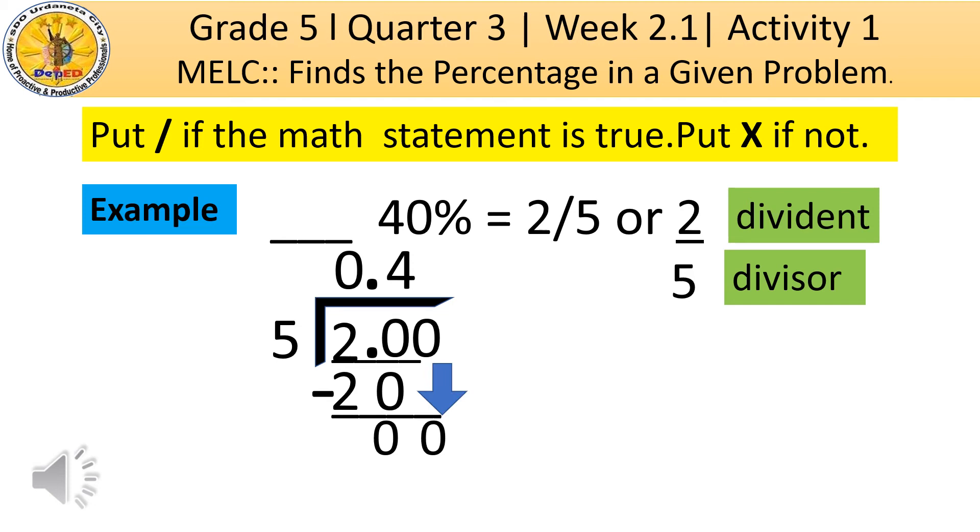Next number. 0 divided by 5 is 0. Then, 0 times 5 is 0. Then, subtract.